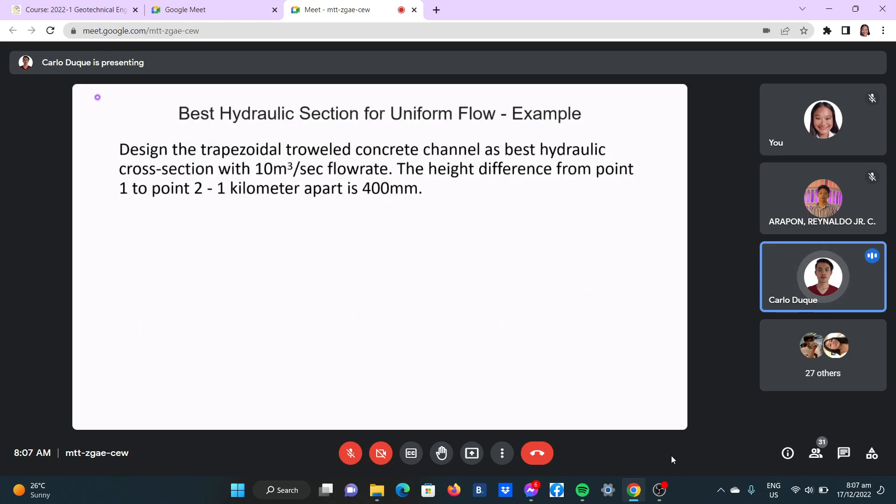So this is our example, last example. Design a trapezoidal traveled concrete channel based on best hydraulic cross-section with 10 cubic meter per second flow rate. The height difference from point 1 to point 2, 1 kilometer apart, is 400 mm.